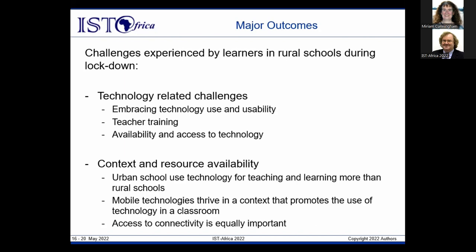In terms of context and resource availability, urban schools in South Africa used technology for teaching and learning more than rural schools, largely attributable to availability and access to technology. Mobile technologies thrive in a context that promotes technology use in the classroom. Access to connectivity is equally important — even where learners had ICT devices at home, without Internet access they could not submit tasks to teachers or access the content teachers wanted them to have.